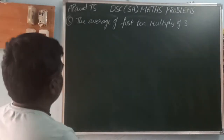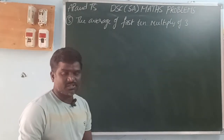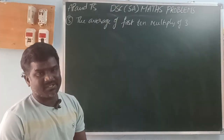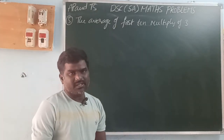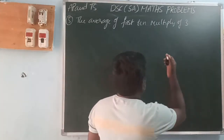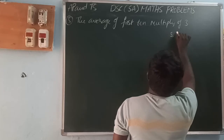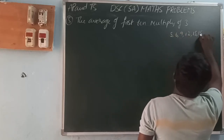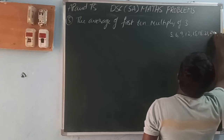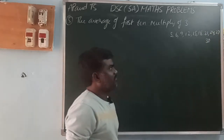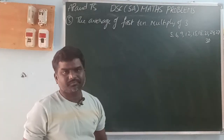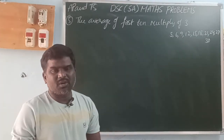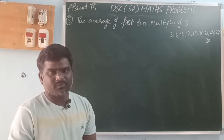Next: find the average of the first 10 multiples of 3. The first 10 multiples of 3 are: 3, 6, 9, 12, 15, 18, 21, 24, 27, 30. Average equals sum of observations divided by number of observations.